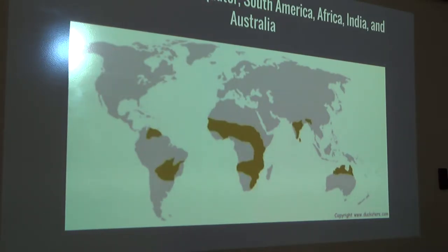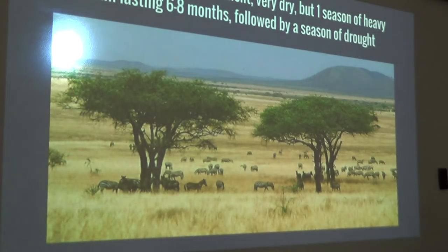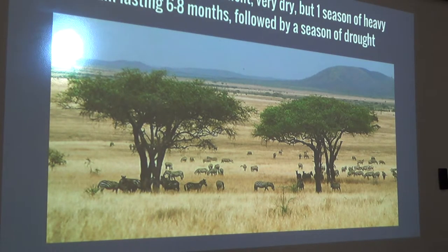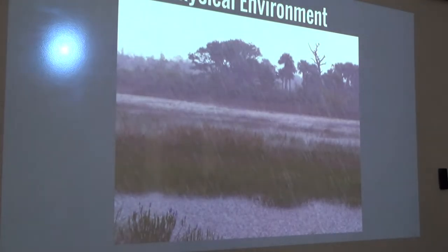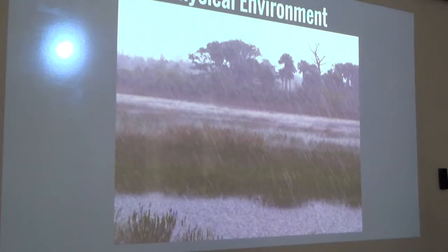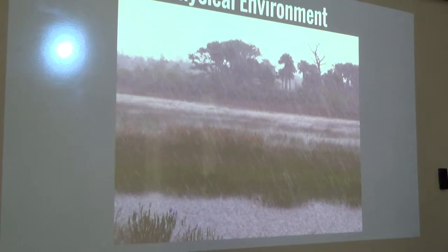The tropical grasslands, or savannas, are located near the equator, found in South America in Brazil, Colombia, and Venezuela, in large parts of Africa stretching from west to east, and in large parts of India and northern Australia. These biomes have very high temperatures, usually not going below 64 degrees Fahrenheit. They're typically very dry but have a season of heavy rain, anywhere from 20 to 50 inches, lasting about six to eight months, followed by a heavy season of drought.